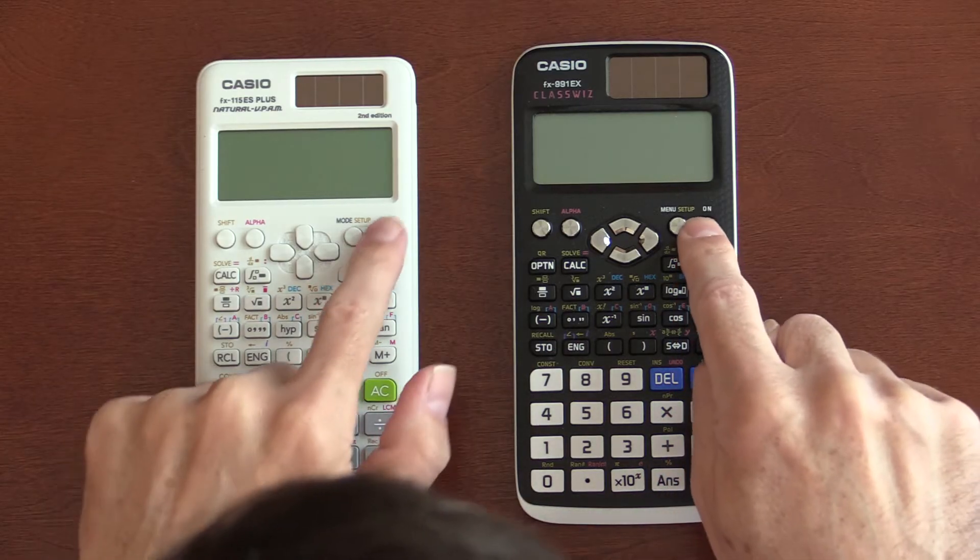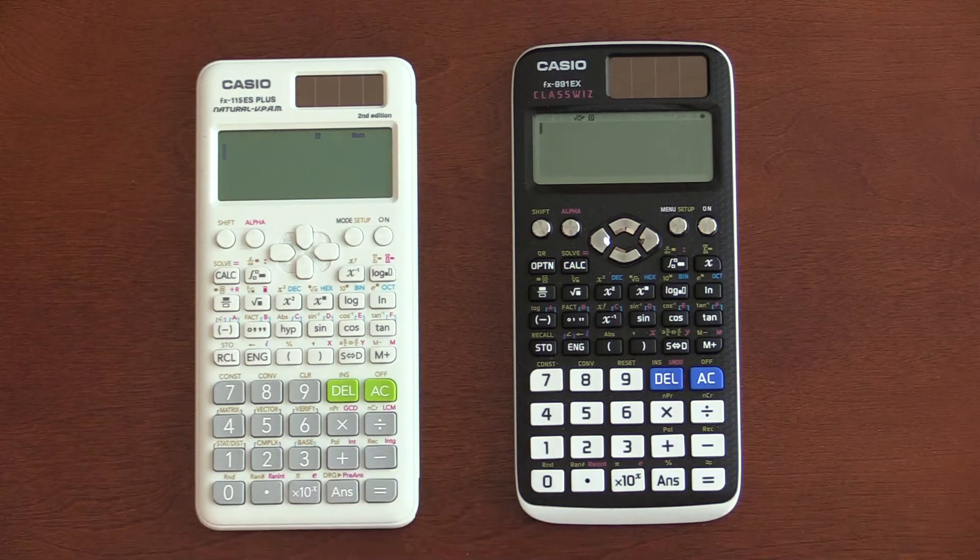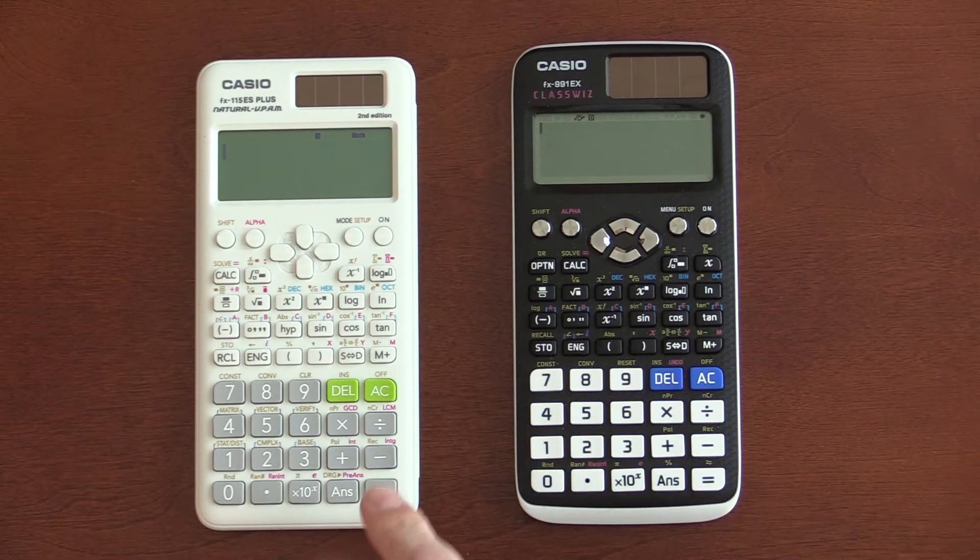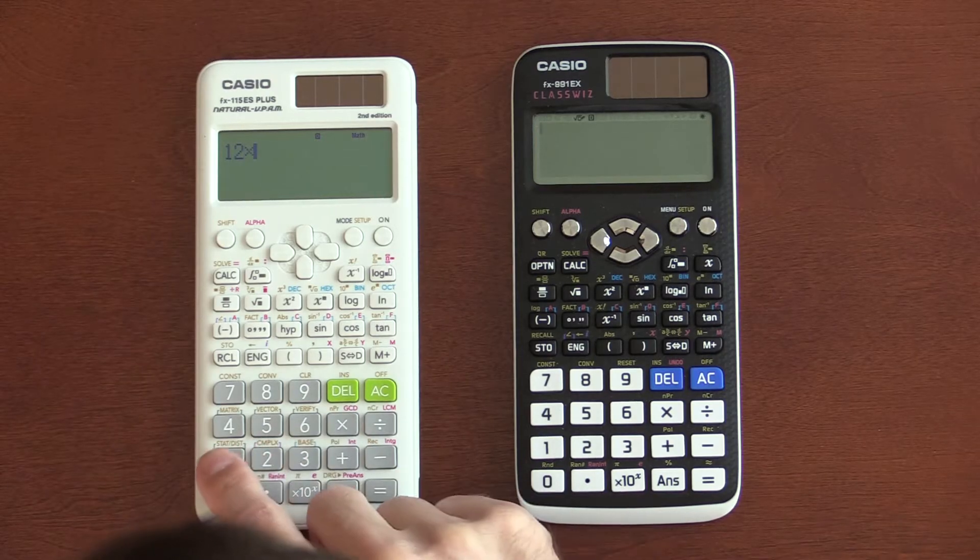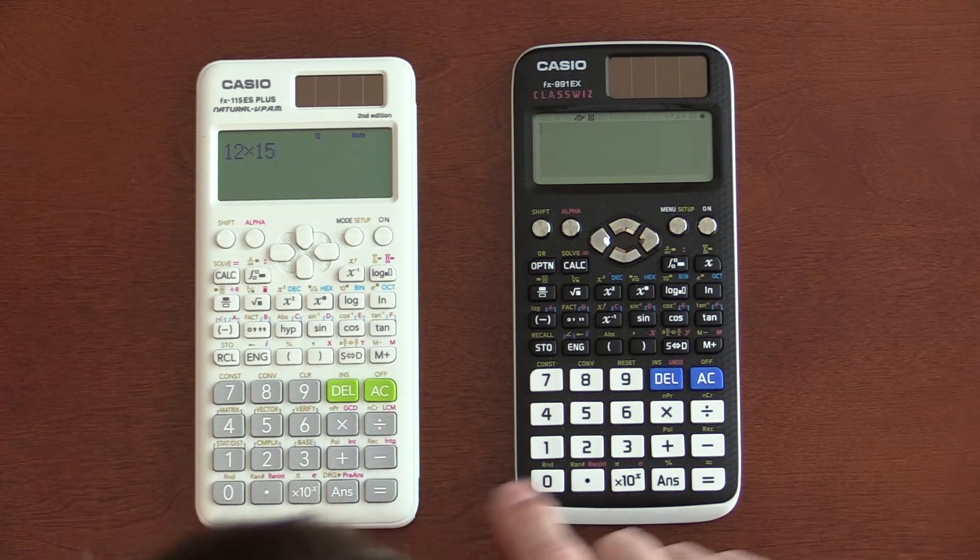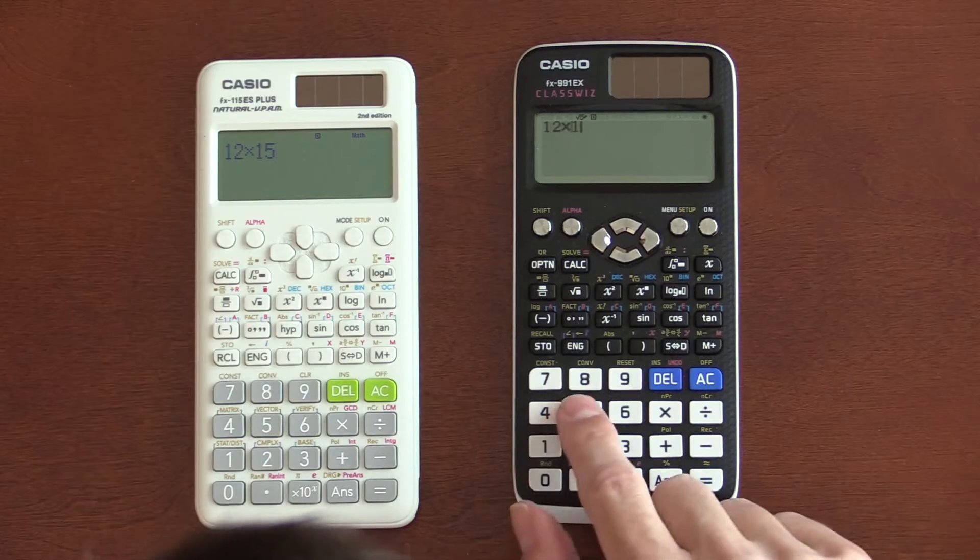First thing you're going to notice about these calculators is the difference in the display. For example, if I put in 12 times 15 on this one, and 12 times 15 on this one.